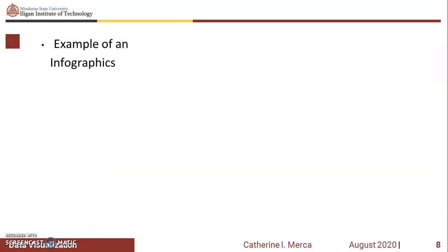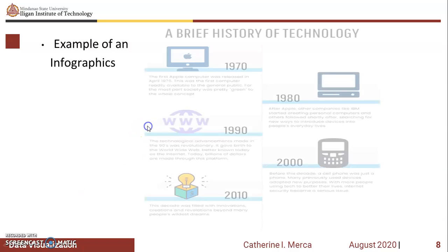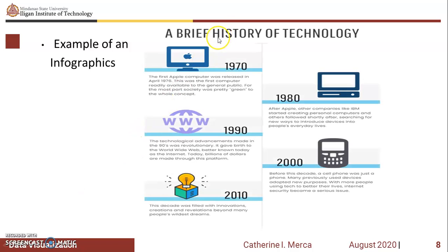Here is an example of an infographic designed as information design. This type of infographic actually focuses on the display of information efficiently and effectively. It differs from data visualization because it is not made from specific data; rather, it is based on information.